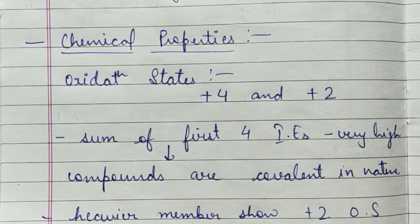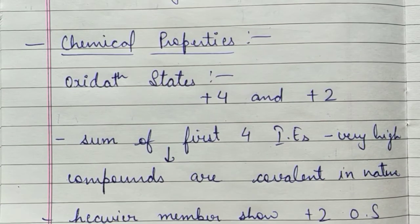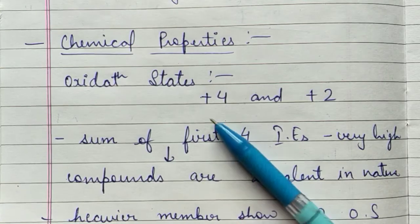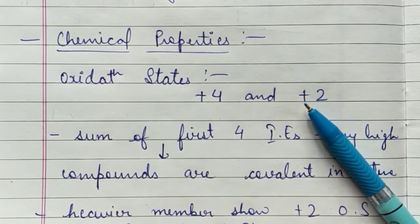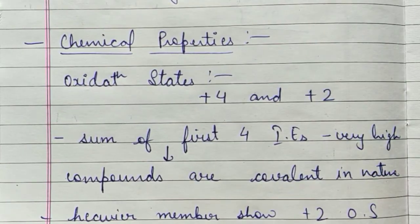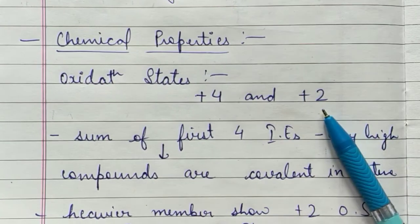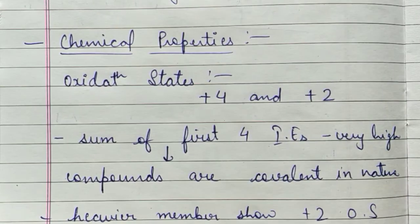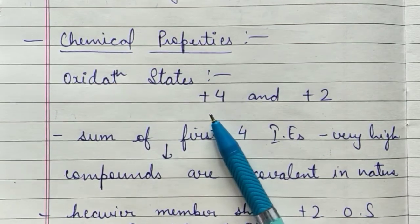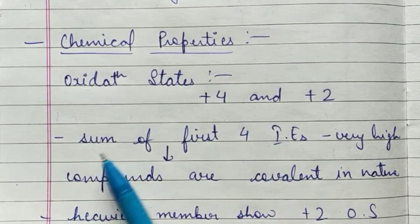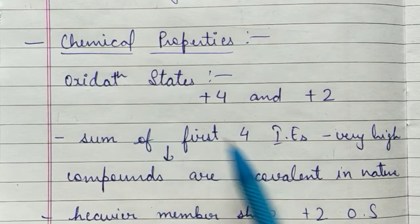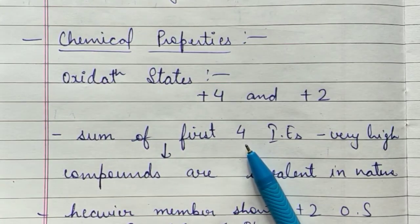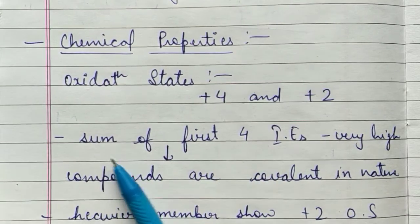Now the chemical properties: regarding oxidation states, mainly in the carbon family, +4 and +2 oxidation states are seen. The +2 oxidation state is seen in heavier elements due to the inert pair effect. For the +4 oxidation state, an atom needs to lose 4 electrons, which requires a very high amount of energy.